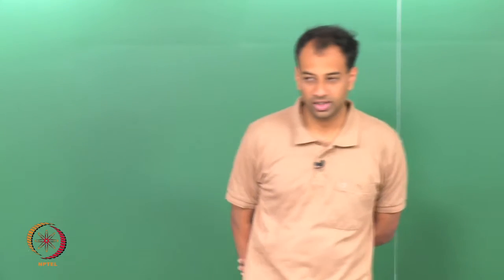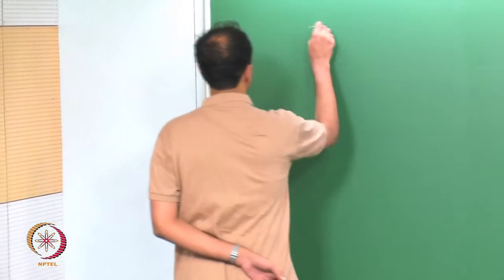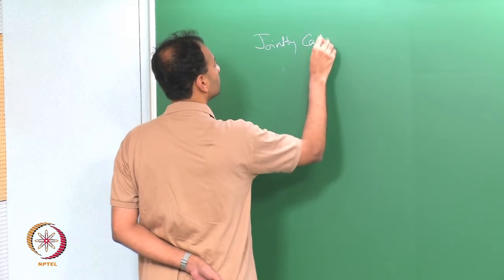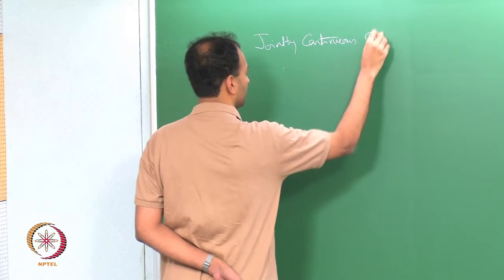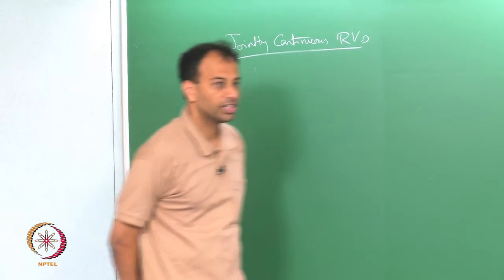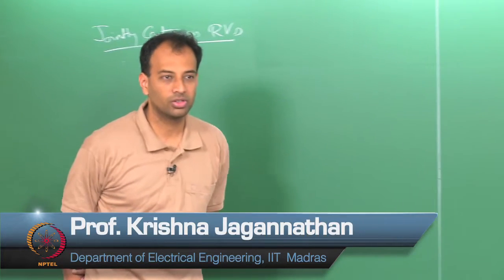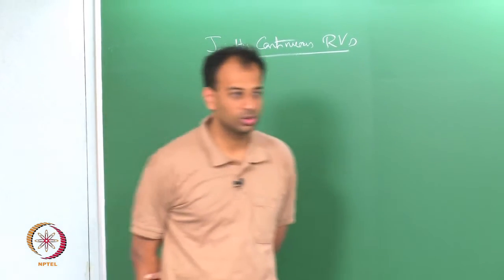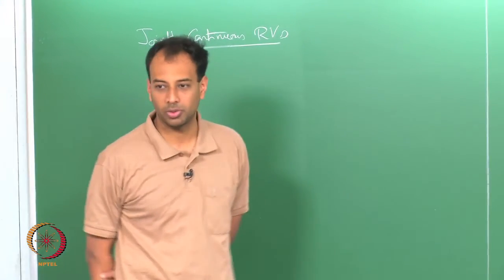Welcome back. We were discussing jointly continuous random variables. We said x and y are jointly continuous if the joint law P_{xy} is absolutely continuous with respect to Lebesgue measure on R². So if you take any zero-area Borel set on R² it should have probability 0 under the map (x, y).